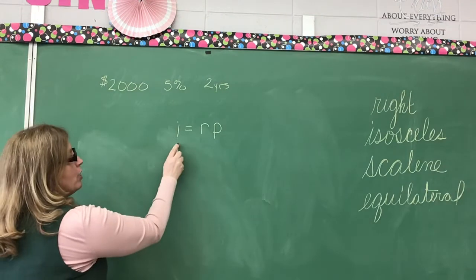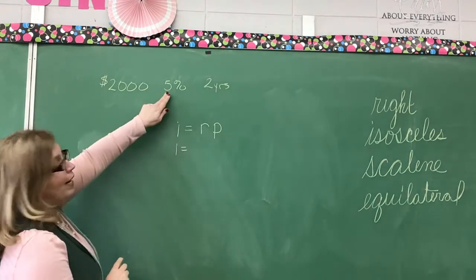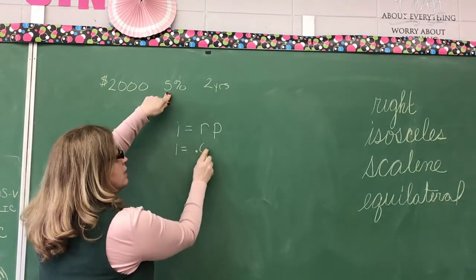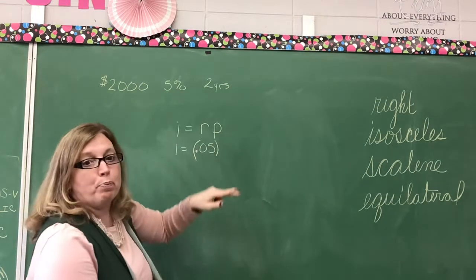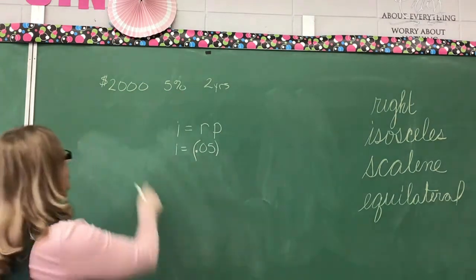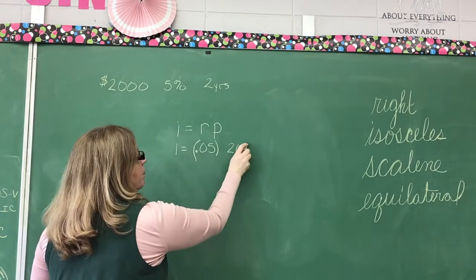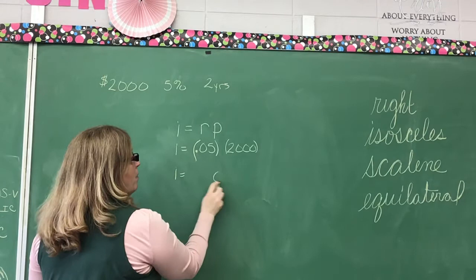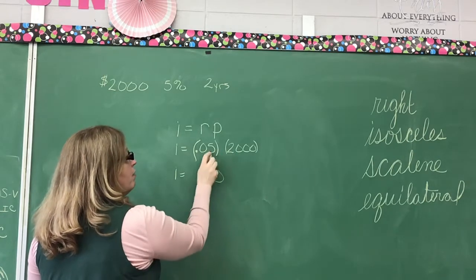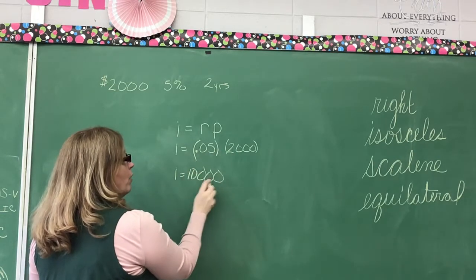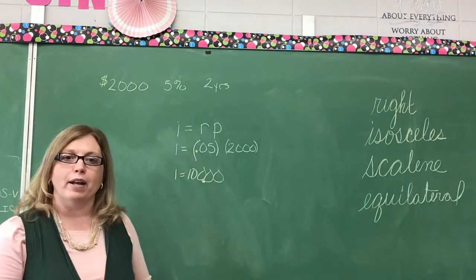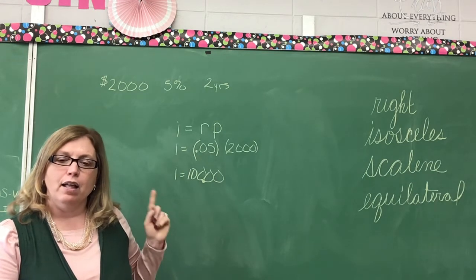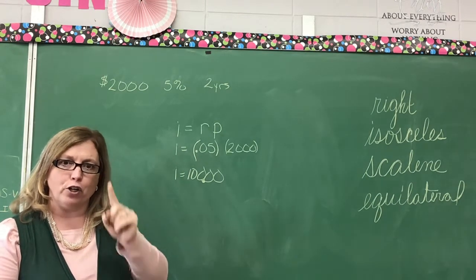So, we don't know what our interest is. That's what we're looking for. But our rate is 5%. Change 5% to a decimal. It is 0.05. What is the principal? The principal is $2,000. So, now let's multiply. 5 times 0, 5 times 0, 5 times 0, 5 times 2. Where do I need to put my decimal? Right there. It's after the 100.